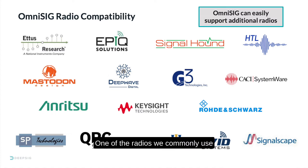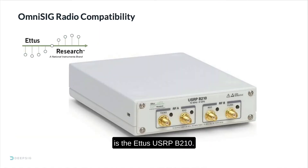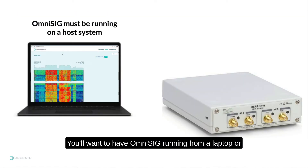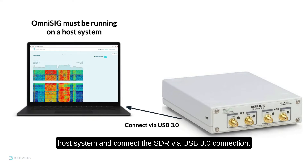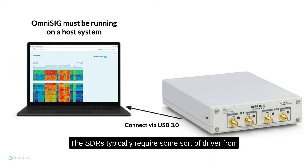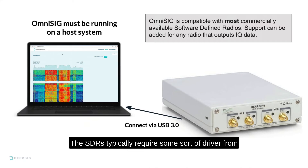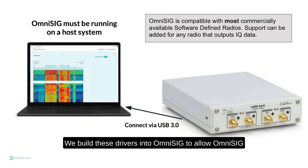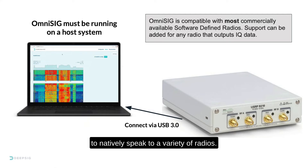One of the radios we commonly use is the EDIS USRP B210. You'll want to have OmniSig running from a laptop or host system and connect the SDR via a USB 3.0 connection. The SDRs typically require some sort of driver from the SDR vendor so that applications like OmniSig know how to talk to the radio. We build these drivers into OmniSig to allow OmniSig to natively speak to a variety of radios.